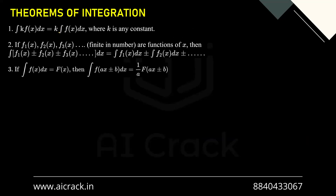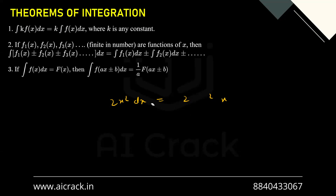Now let's talk about the theorems of integration. The first one is: integral of k·f(x) dx = k times integral of f(x) dx, where k is a constant. For example, integral of 2x² dx — we can take the 2 outside the integral, giving 2 times integral of x² dx. That's what the first property means.